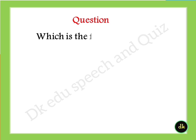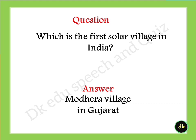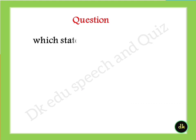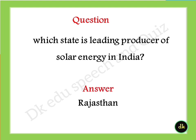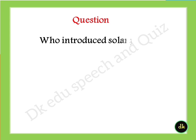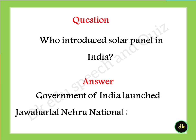Which is the first solar village in India? Answer: Mudhira village in Gujarat. Which state is the leading producer of solar energy in India? Answer: Rajasthan. Who introduced the solar panel in India? Answer: the Government of India launched the Jawaharlal Nehru National Solar Mission on 11 January 2010.